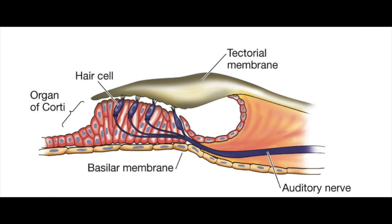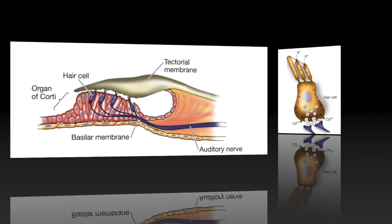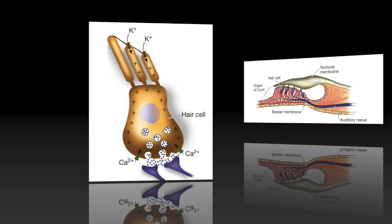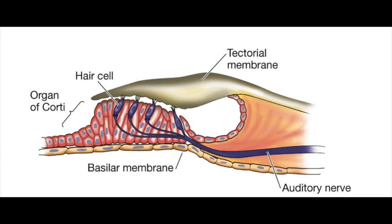On top of the basilar membrane is a structure called the organ of corti. The organ of corti contains hair cells, which are auditory receptors. Hair cells convert mechanical energy into a change in membrane polarization. When the basilar membrane vibrates, it causes the organ of corti to move up and down.